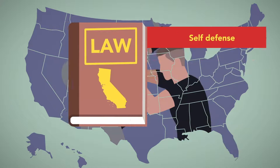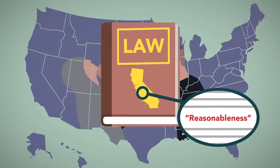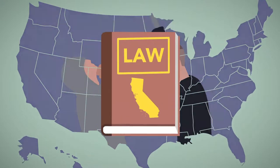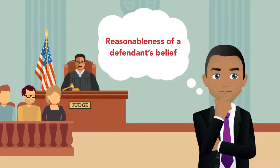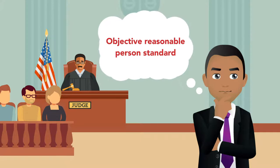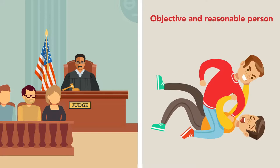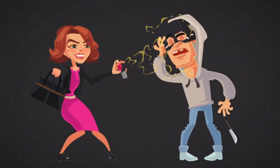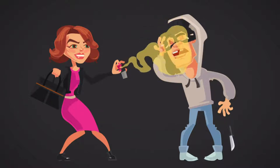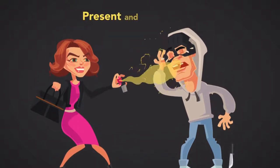As exemplified by the language of the statute, reasonableness is an important aspect of self-defense. When making these determinations about the reasonableness of a defendant's belief, courts use an objective, reasonable person standard, which means that the court determines whether an objective and reasonable person would have acted similarly under comparable circumstances. The presence of a real and imminent danger is another vital part of self-defense, meaning that the perceived harm is present and immediate.